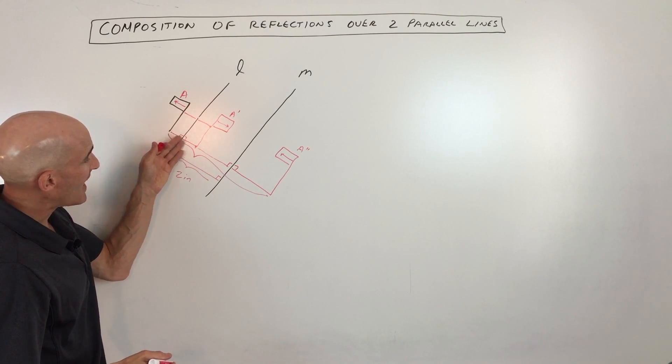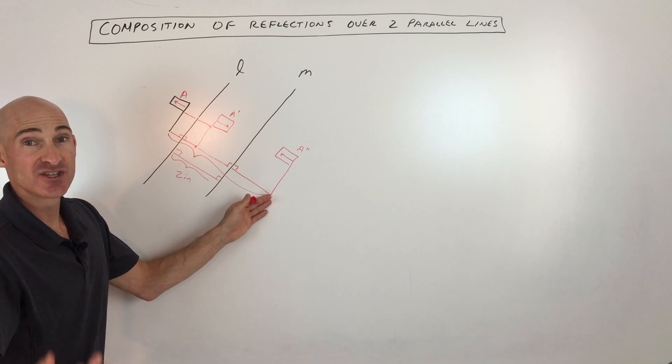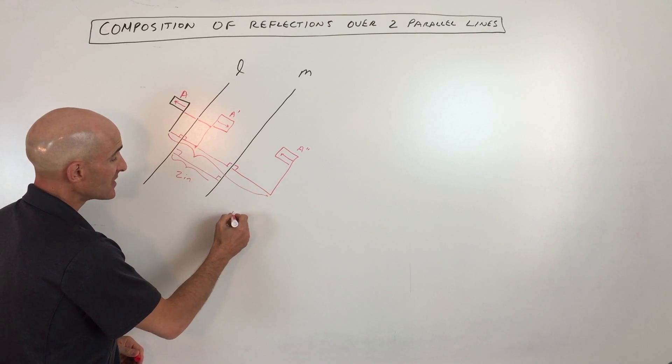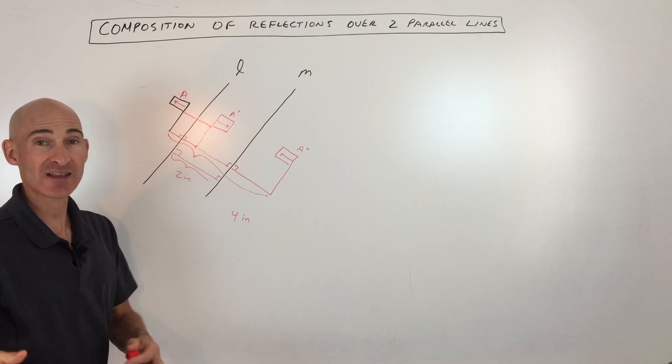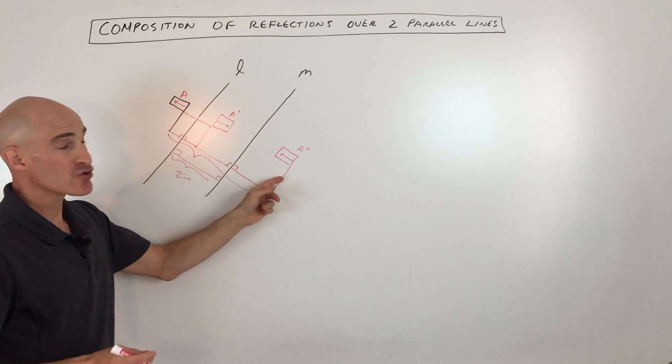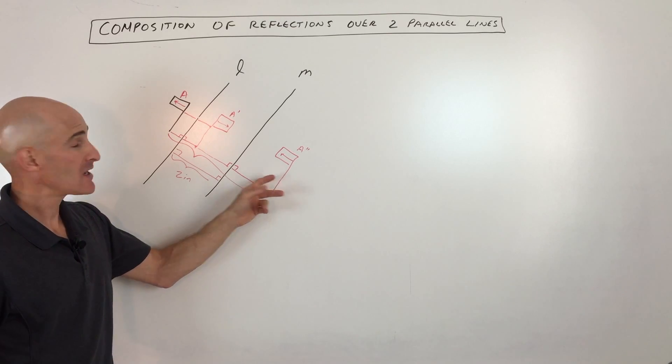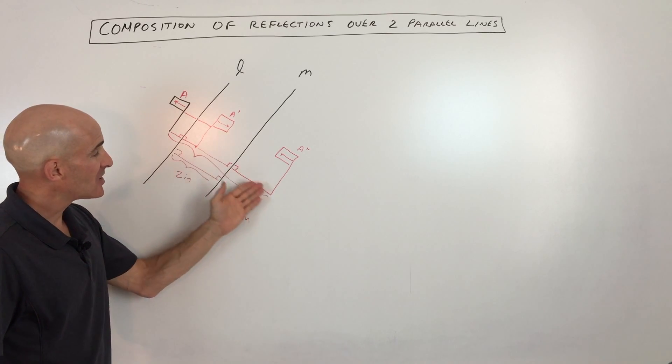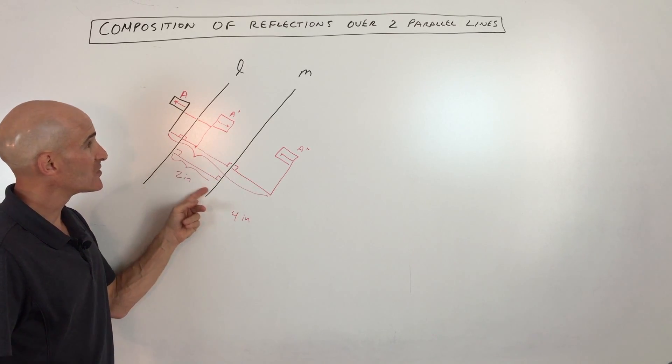Well then what would happen is the figure would actually slide double. So it would be a translation of four inches. So that's the key. A composition of reflections ends up being a translation or a slide, however you want to say it, and it ends up sliding double the distance between the two parallel lines.